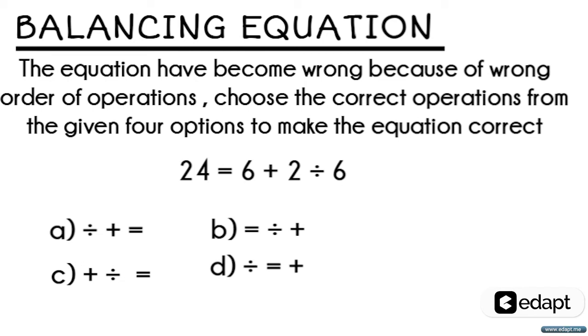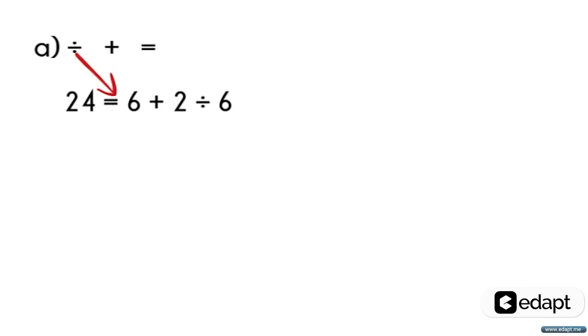In such type of questions, substitute each option which will get you the correct answer. So in this case, let us go with the first option. Choose option A. Change this same as in option A. So we will get 24 divided by 6 plus 2 is equal to 6.